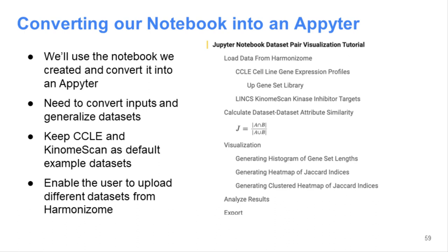The last part of today's lecture will take the notebook we went over that compares two datasets and convert it into an Appyter. You'll be able to upload two data files from Harmonizome or two gene set libraries, compare them, generate heatmaps, and find the top associations identified when you cross those two datasets. We will use the CCLE and KinomeScan datasets as the example datasets.